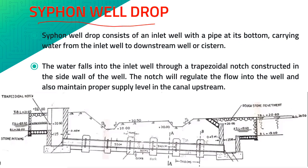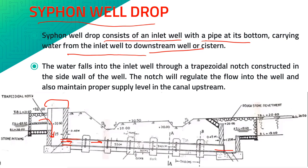First of all, let us see what a siphon well drop is. It is a kind of canal drop constructed when a road crosses a canal and at the same point we have to provide a change in elevation or a drop. A siphon well drop consists of an inlet well with a pipe at its bottom carrying water from the inlet well to the downstream well or system. This is the inlet well, and this is the pipe. This pipe carries the water falling into the well to the downstream side, and this is the downstream well.